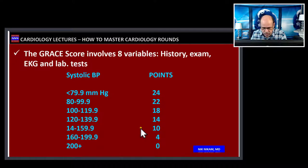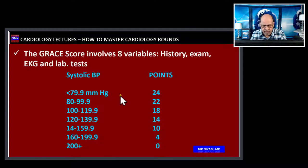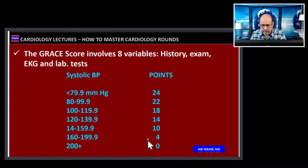The systolic blood pressure scoring assigns the highest risk to patients presenting with a systolic blood pressure below 80 mmHg, as these patients may be in cardiogenic shock, have significant left ventricular dysfunction, or be hypovolemic. As blood pressure improves, the point values decrease. Interestingly, patients with hypertension did not carry any additional risk factor for cardiovascular outcomes in-hospital, at six months, or at three years.